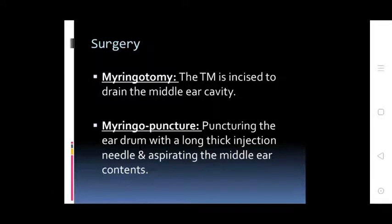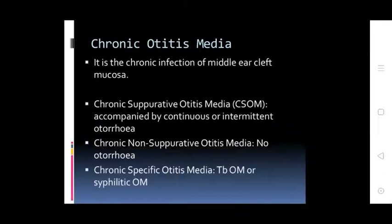Surgery: Myringotomy — incision of the TM to drain the middle ear cavity. Myringopuncture — puncturing the eardrum with a long thick injection needle and expression of the middle ear contents.